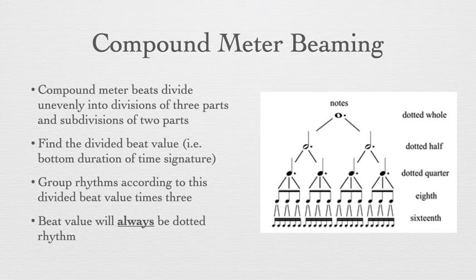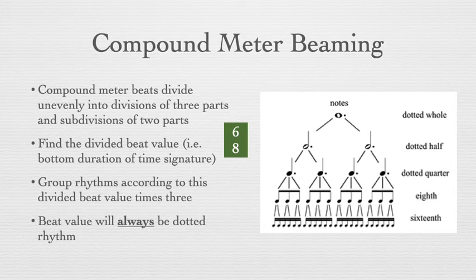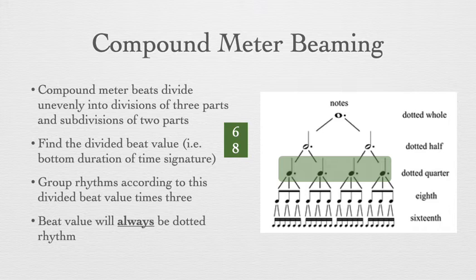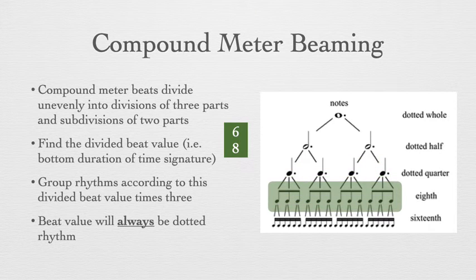In compound meter, we have an unequal division of the main dotted beat into three divisions, which in turn divide into two subdivisions as we move down the rhythm tree. In compound meter, you take your meter — say 6/8 — and find the divided beat value, which is the eighth note, or the bottom number of your meter signature. Multiply this value by three to get your dotted rhythm value. So in compound meter, your big beats are always going to be a dotted value. In 6/8, the dotted quarter note is the beat level, which divides into three beamed eighth notes representing one beat. Below this, the subdivided sixteenth notes are also divided into one beat. Each layer of the rhythm tree is challenging in compound meter because we need a new dotted rhythm focus for each beat level.